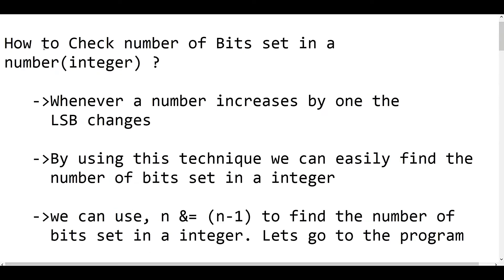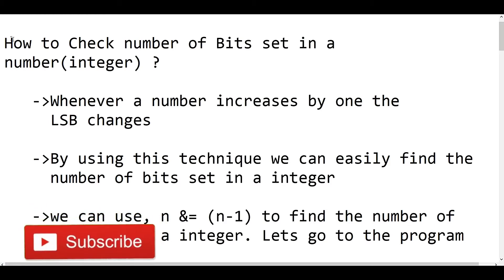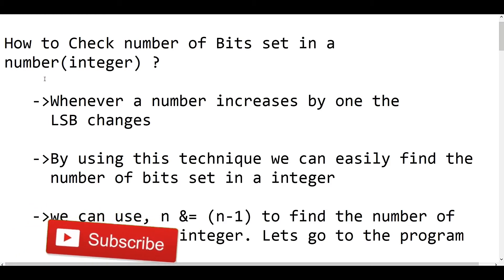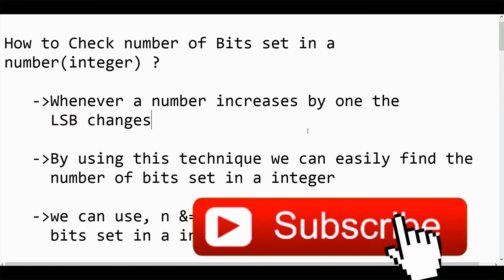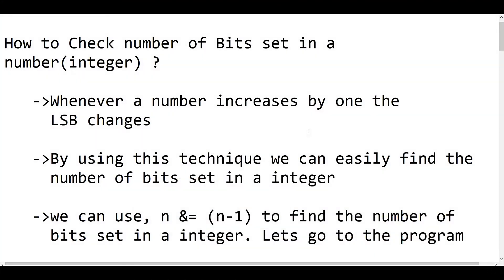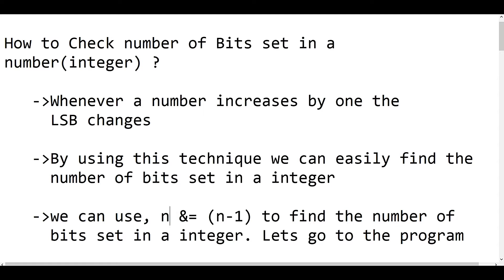In this video we will see how to check the number of bits set in an integer number. Whenever a number increases by 1, the LSB changes its state, that is it changes from 0 to 1 or 1 to 0. By using this technique we can easily find the number of bits set in an integer. We can use n equal to n AND n-1.